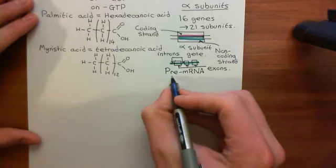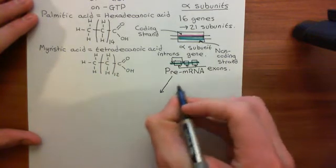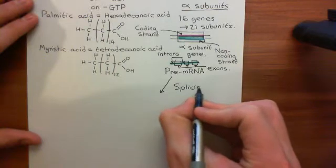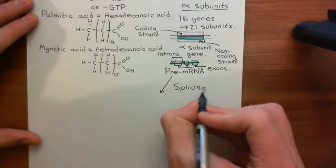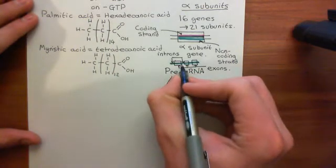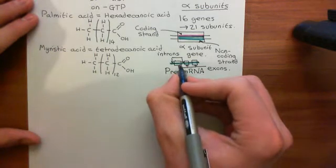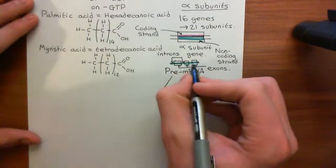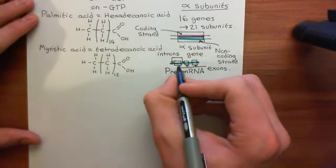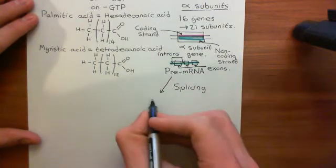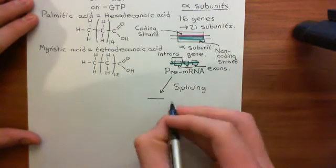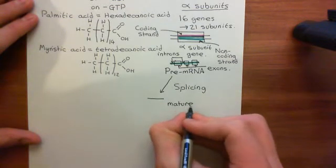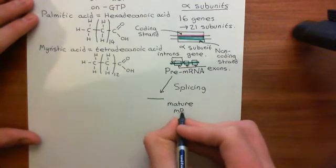What's going to happen is a process called splicing. In splicing, the introns are cut out — you cut at either side of the intron and remove it — and then you stick the exons back together to make a piece of mature mRNA, which is then actually ready to be translated by a ribosome into a protein.